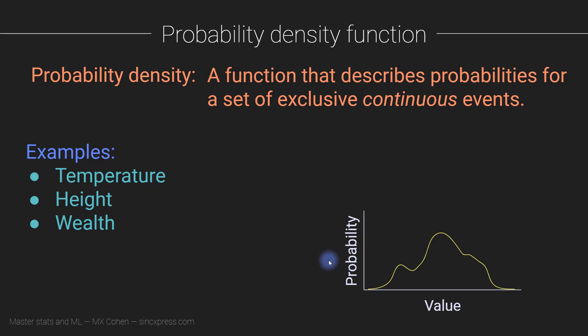And that also means that when we are working with probability density functions in practice, what we usually do is define a specific range for the probability density function. So we would say, what is the probability that someone is between 5 foot 11 inches and 6 feet tall? Or what is the probability that in the summer in Amsterdam, it's going to be less than 15 degrees Celsius, which unfortunately happens in the summer here in Amsterdam.